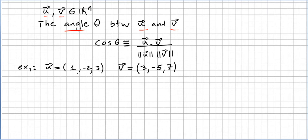If u is the vector (1, -2, 3) and v is the vector (3, -5, 7), the angle between these two vectors is going to be... cosine of theta would be equal, so we have to do 1 times 3, minus 2...